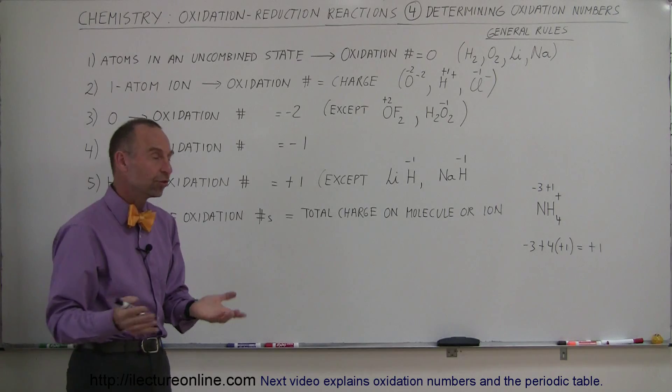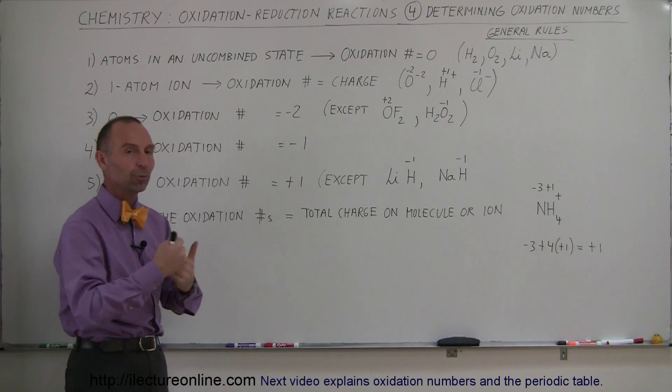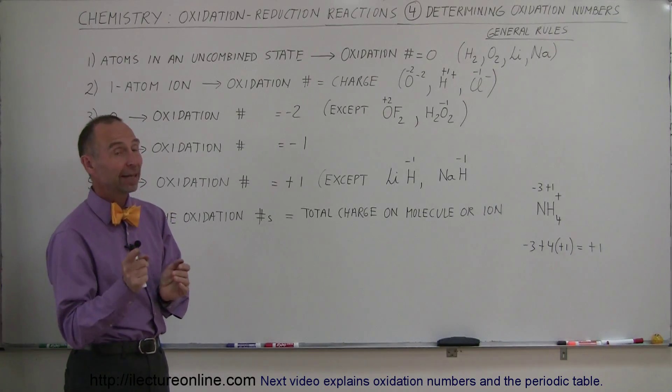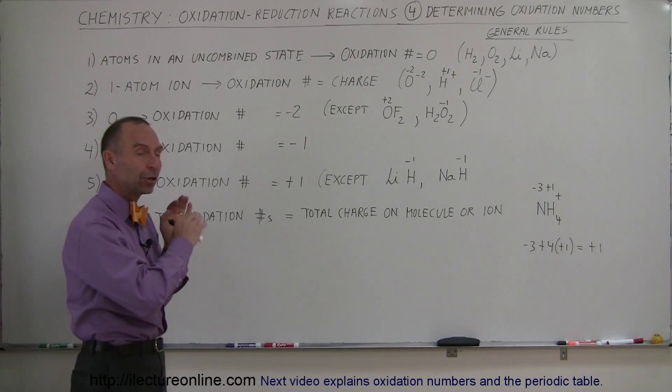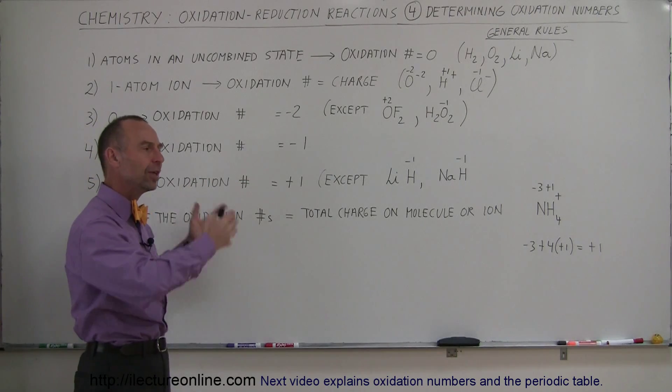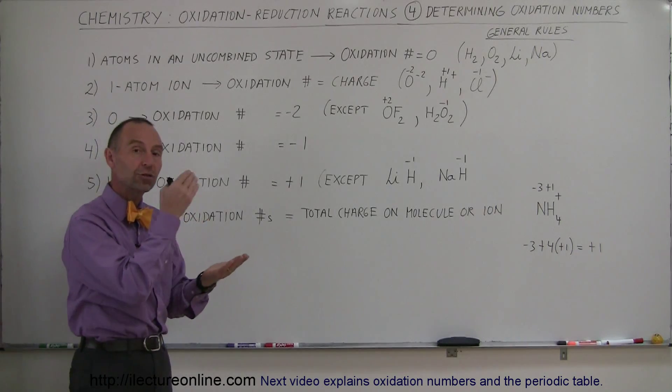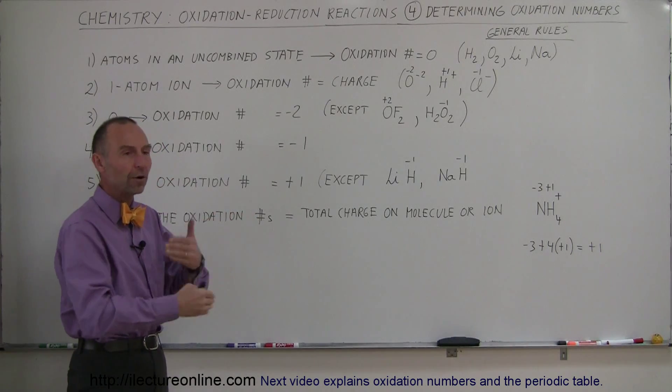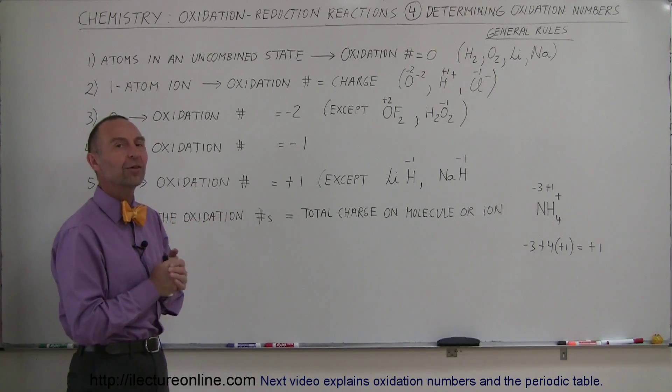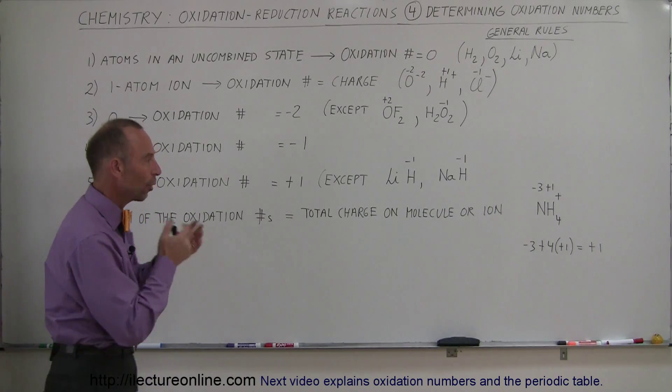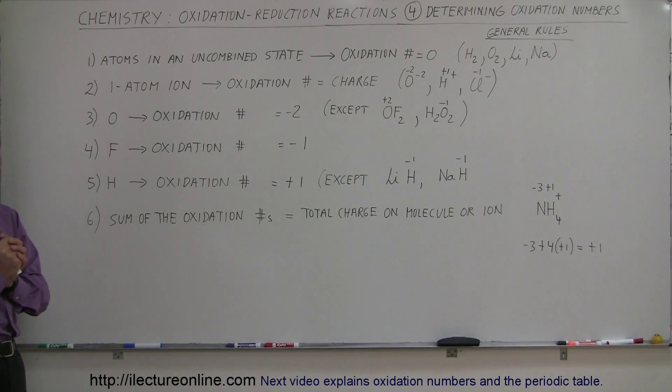So these are the six rules, general rules, and they help us determine what the oxidation number is. On the next video, we'll go ahead and take a look at the whole periodic table to see the trends in the oxidation numbers on the periodic table, and what we know is to be always the case, and what we know are options depending upon which other atoms they bond with. So hopefully, this will give you a pretty good idea of the general rules of oxidation numbers.